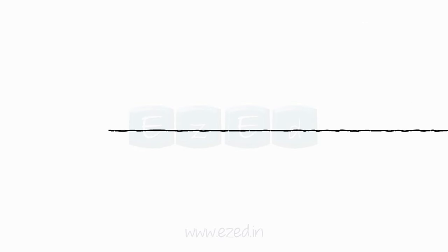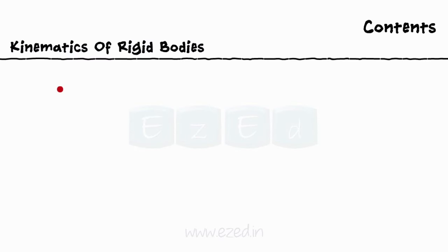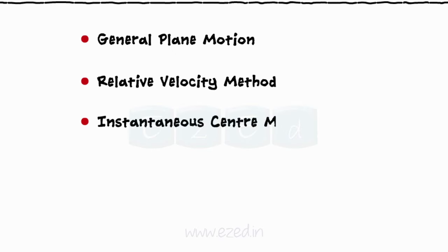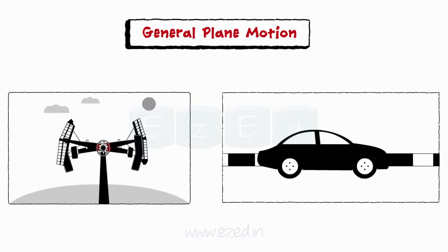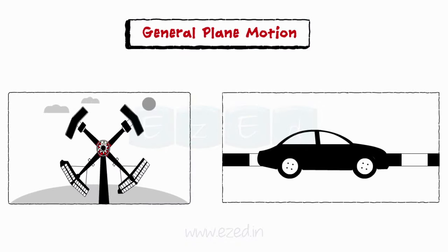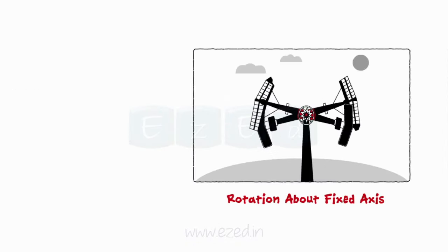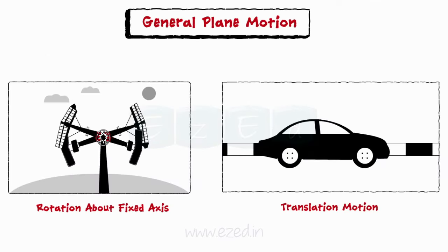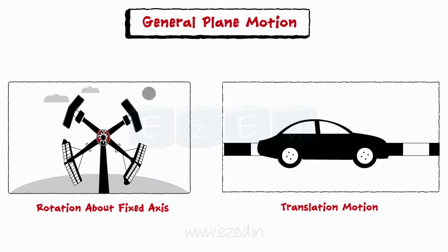In this Easy Ed video lecture, we will see rigid bodies moving in general plane motion and methods to solve bodies under general plane motion, which are the relative velocity method and instantaneous center method. Any plane motion which does not fall under the category of rotation about fixed axis or translation motion can be put under the category of general plane motion.